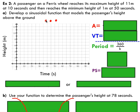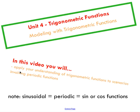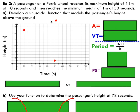This time, we've got a passenger on a Ferris wheel. We're being told the Ferris wheel reaches a max height of 11 meters at 10 seconds. So I'm just going to quickly plot that - at 10 seconds, I reach a max height of 11 meters, and then reaches the minimum height of one meter at 50 seconds. My goal is to develop a sinusoidal function that models the passenger's height above the ground over time. Sinusoidal means periodic, that's a sine or a cosine function. I like to graph these things - I'm a visual guy, so I find it kind of useful to know what's going on visually.